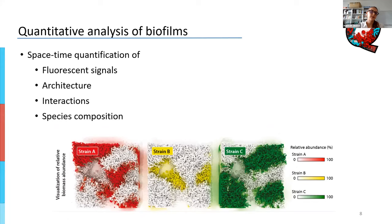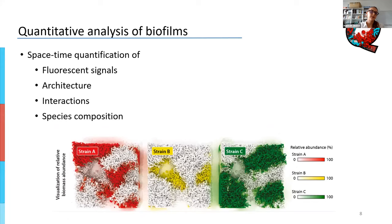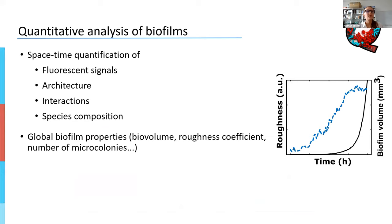You can also look at compositions and relative abundances in space and in time. But of course you can also just ask how your general biofilm architecture and properties evolve over time — how does the roughness evolve, how does the volume evolve, how does height, thickness, and density change in the biofilm? All of these questions are answerable with BiofilmQ.